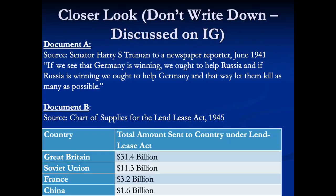Looking at two documents at the bottom of the PowerPoint: one is from Harry Truman, who was a senator at the time but would become president. He says: 'If we see that Germany is winning, we ought to help Russia. And if we see Russia is winning, we ought to help Germany. And that way, let them kill as many as possible.' That's truly how Truman felt — he really, really hated Russia. And that's understandable at this point because Stalin was a pretty bad guy.